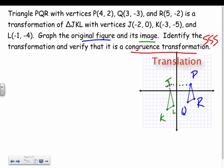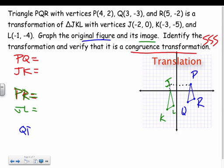So I got to prove that PQ is the same distance as JK, and I have to prove that PR is the same distance as JL, and I have to prove that QR is the same distance as KL.